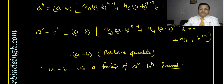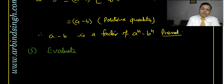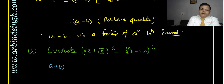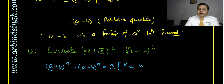Question number 5: evaluate (√3 + √2)^6 - (√3 - √2)^6. We know the formula: (a + b)^n - (a - b)^n = 2 · [NC1·a^(n-1)·b + NC3·a^(n-3)·b³ + NC5·a^(n-5)·b⁵ + ...], which retains only odd-numbered terms. Putting a = √3 and b = √2 gives twice of: 6C1·(√3)^5·√2 + 6C3·(√3)³·(√2)³ + 6C5·√3·(√2)^5.